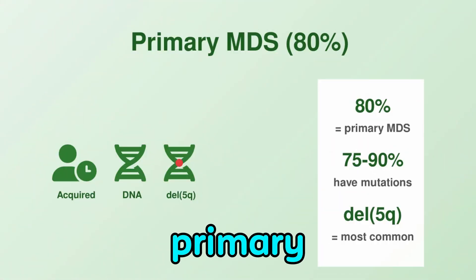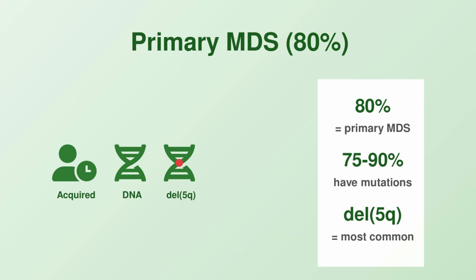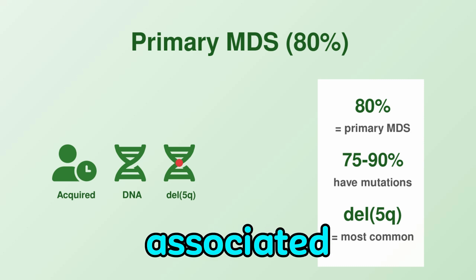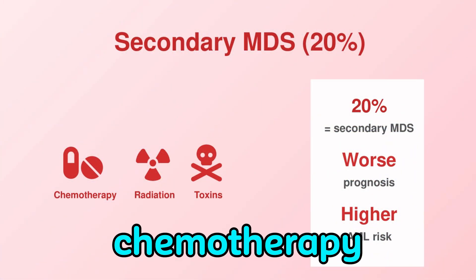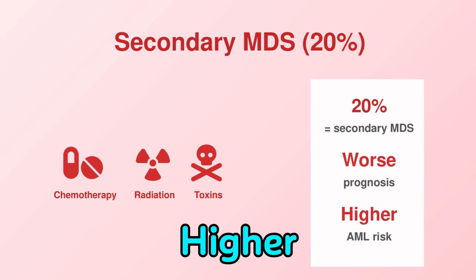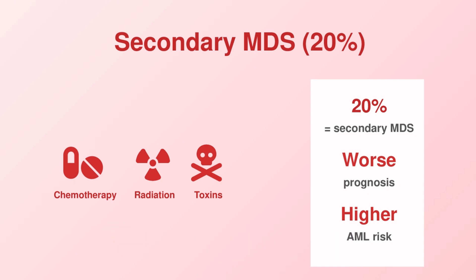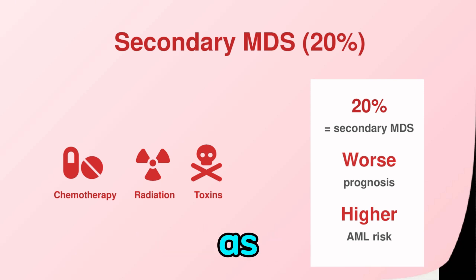MDS can be primary or secondary. Primary MDS accounts for about 80% of cases; most patients have at least one genetic mutation, and the most common cytogenetic abnormality is deletion of chromosome 5, or DEL5Q, which is associated with a lower risk of progression to AML. Secondary MDS occurs after chemotherapy, radiotherapy, or exposure to toxins like benzene or tobacco smoke. It usually has a poorer prognosis and a higher risk of transformation to AML. MDS may also be linked to autoimmune diseases such as rheumatoid arthritis.